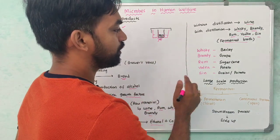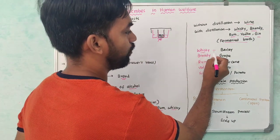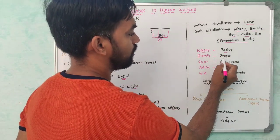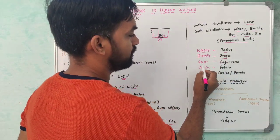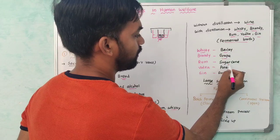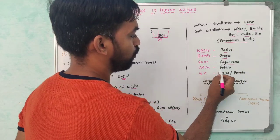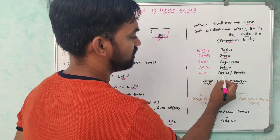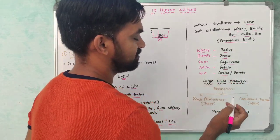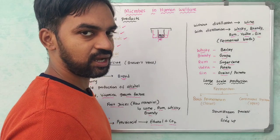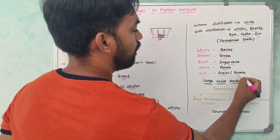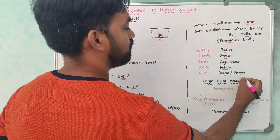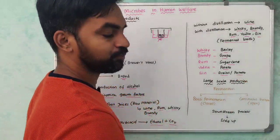The raw materials for each beverage: whisky uses barley, brandy uses grapes, rum uses sugarcane, vodka uses potatoes, and gin uses grains and potatoes.